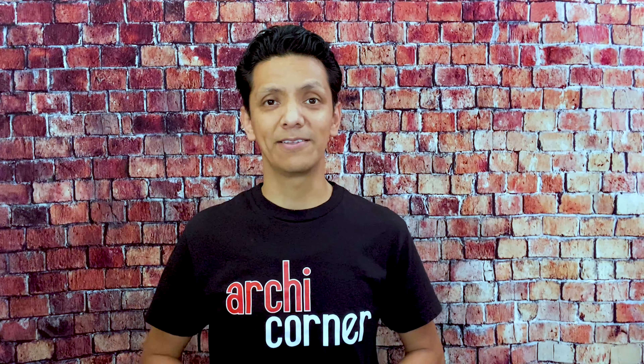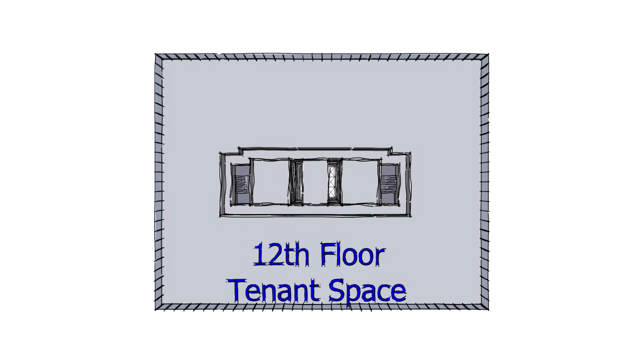Next, we're going to talk about egressing or exiting the building. To show the exit example, let's start from the top of the building. We're going to work in reverse. If we want to exit the 12th floor tenant space, we exit into the corridor, shown in blue. And instead of going into the elevators, we go into the stairs, shown in red, and we work ourselves down.